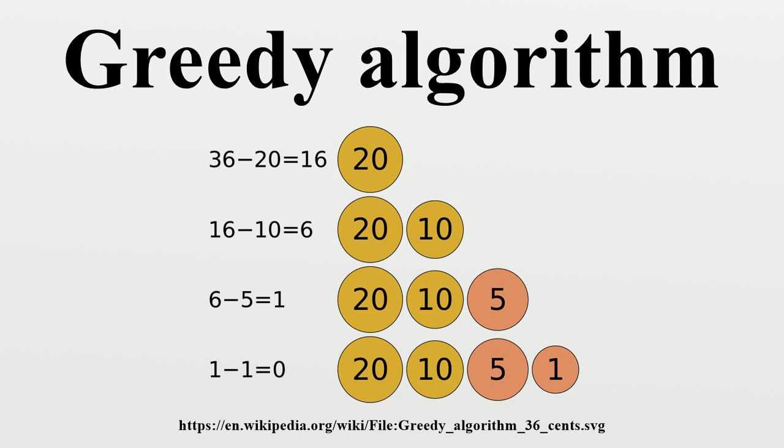This is the main difference from dynamic programming, which is exhaustive and is guaranteed to find the solution. After every stage, dynamic programming makes decisions based on all the decisions made in the previous stage, and may reconsider the previous stage's algorithmic path to solution.